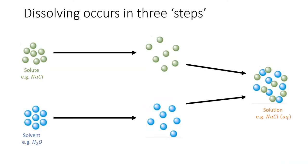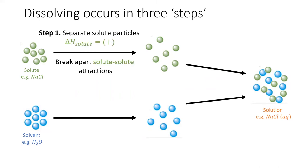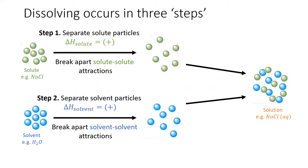In reality the three steps of the dissolving process happen simultaneously, however it's helpful to look at them one at a time. The first step is to break apart the solute particles. The amount of energy needed depends on the strength of the forces holding the particles together, but it is always an endothermic process. The second step is similar: the solvent particles need to be separated from each other to make room for the solute, which means breaking some solvent-solvent IMFs. Breaking apart attractions is always endothermic.